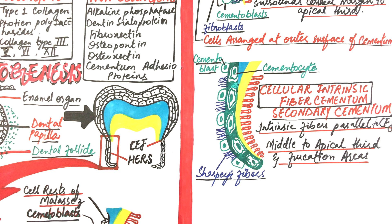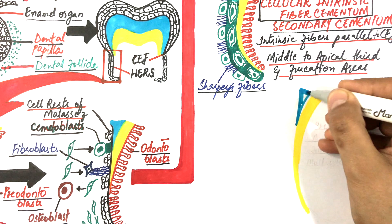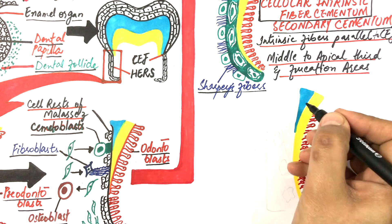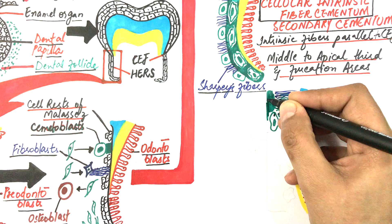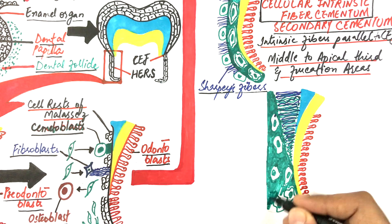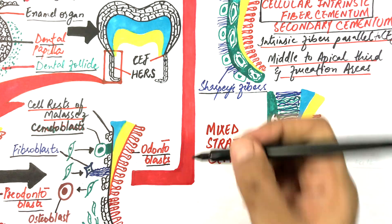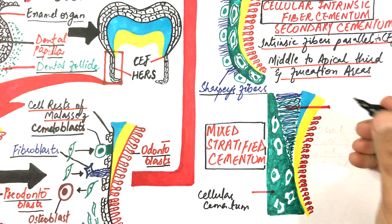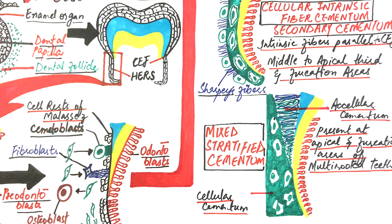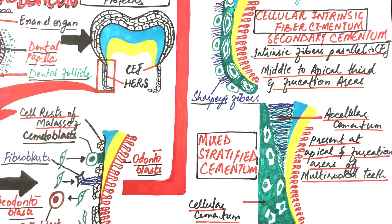The reason extrinsic PDL fibers are not well embedded within cellular cementum is that fibroblasts show a close relationship with cementoblasts during acellular cementum formation, but not during cellular cementum formation, suggesting a role in acellular cementum. At the apical and furcation areas, cellular intrinsic fiber cementum joins or alternates with acellular extrinsic fiber cementum to form mixed stratified cementum. This type has both cellular and acellular cementum and is present at the apical third and furcation areas of multi-rooted teeth.